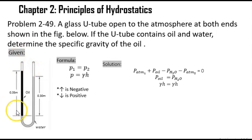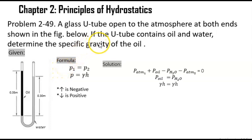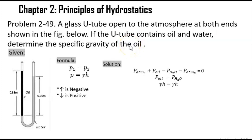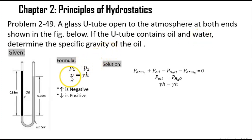Now that we are done identifying our given, we can proceed in identifying what formula we should use. In our problem, the U-tube contains oil and water, and we need to determine the specific gravity of the oil. So we are going to solve for the pressure of oil and the pressure of water, using the equation P1 equals P2.